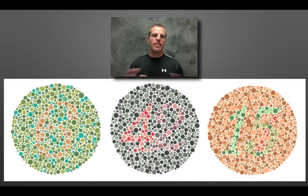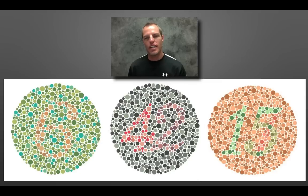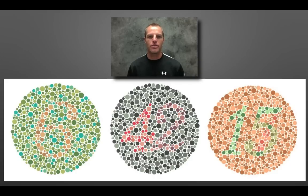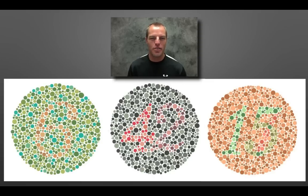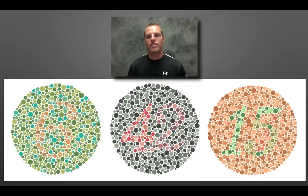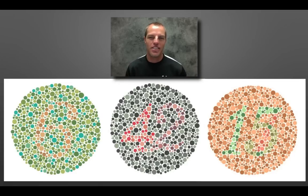I'll finish this screencast on non-Mendelian genetics with a little test: are you red-green colorblind? I have three circles here, each with a number in it — see if you can figure out what number is in each circle. If you said 6, 42, 15, then you're okay. If not, you might have that X-linked recessive gene for red-green colorblindness. If you're red-green colorblind, it doesn't mean the end of the world. I'm Coach Boydston — hope that was helpful. You guys have a good day.